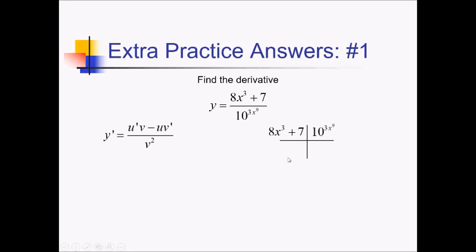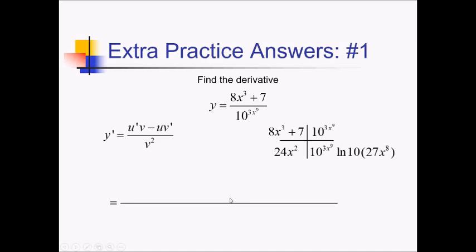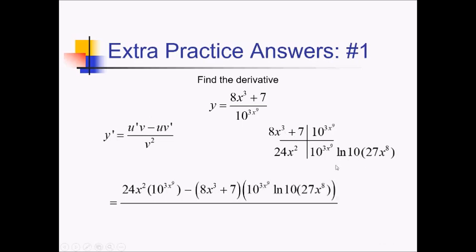And now their derivatives, which are going to be 24x squared. And this one — this is 10 to the something, so I need a chain rule here. The derivative of that would be 10 to the 3x to the 9th, times ln of 10, and then multiplied by the derivative of the inner function, which is 27x to the 8th. Putting it all together, up top I have u'v: 24x squared times 10 to the 3x to the 9th, minus 8x cubed plus 7 times all of that. Downstairs I've got v squared, so that's 10 to the 3x to the 9th, squared.